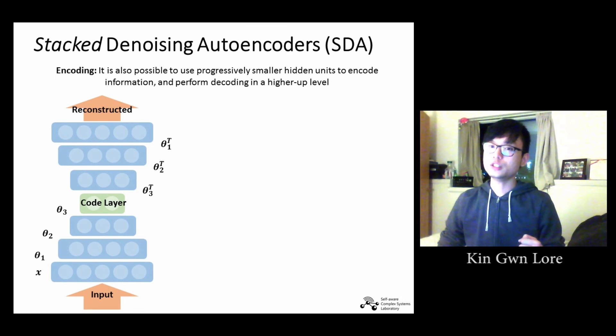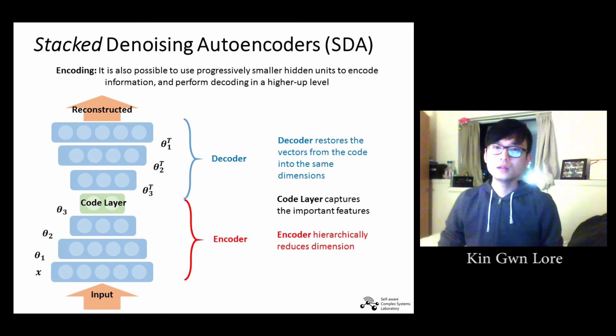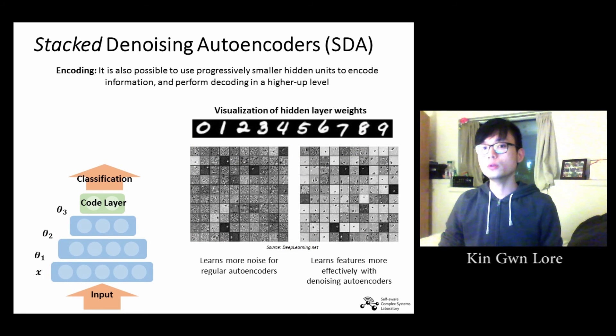Now we have a nicely initialized hidden layer weight. In summary, the encoder hierarchically reduces the dimensions while capturing important features. The code layer holds all the information to reconstruct the output. The decoder restores the vectors from the code into the same dimension as the input. Frequently, we restore the dimensions in image processing applications such as in image denoising and image deblurring. However, for classification problems, it is usually sufficient to stop at the code layer.